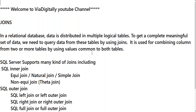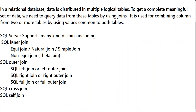What are the types of joins we can use in SQL Server? We have: SQL Server inner join — also called equi join, natural join, or simple join. The opposite of equi join is non-equi join, also called theta join. We also have SQL outer join, which has three types: left join or left outer join, right join or right outer join, and full join or full outer join.